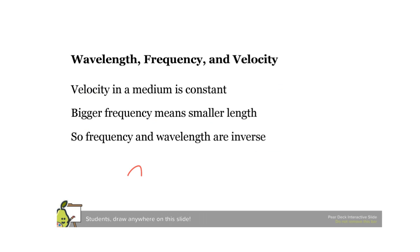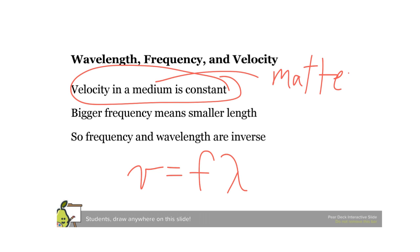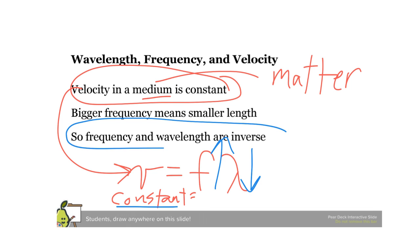So the relationship between velocity, frequency, and wavelength—the way it works is that the velocity in a medium (so medium means the type of matter you're talking about, like a wave in water or on a string) stays constant. What that means is that if you increase the frequency, the wavelength will go down. So frequency and wavelength are opposite of each other.